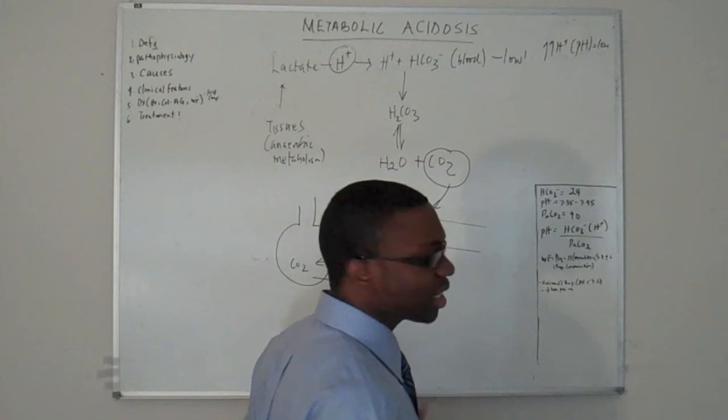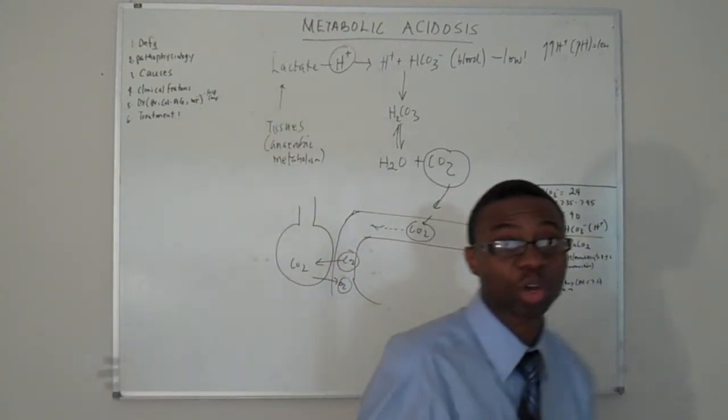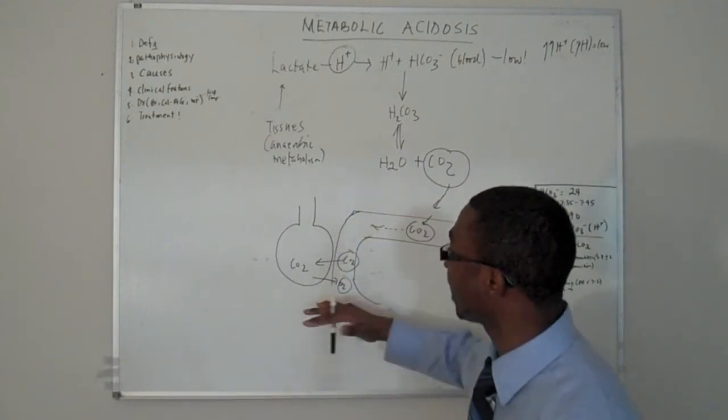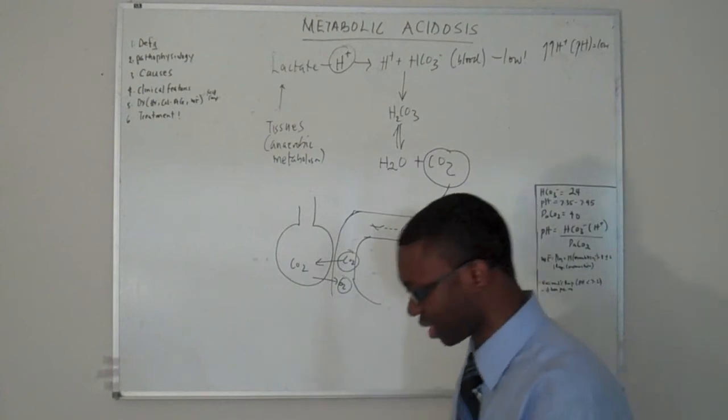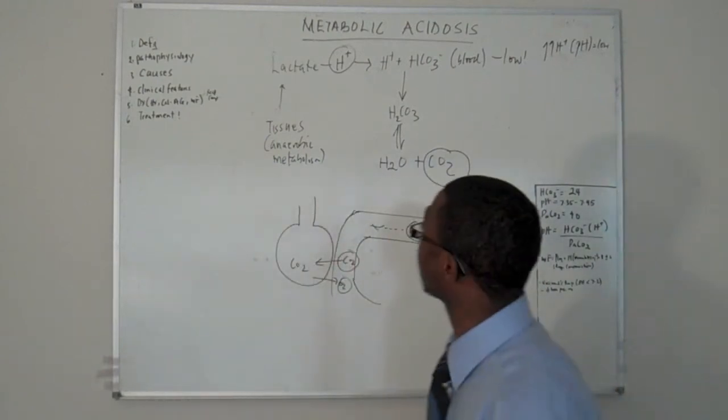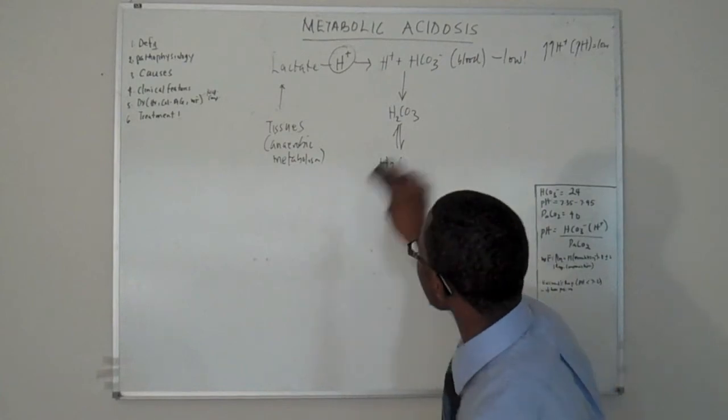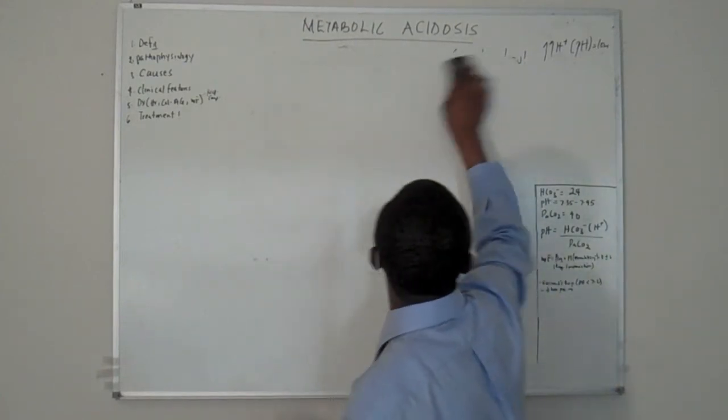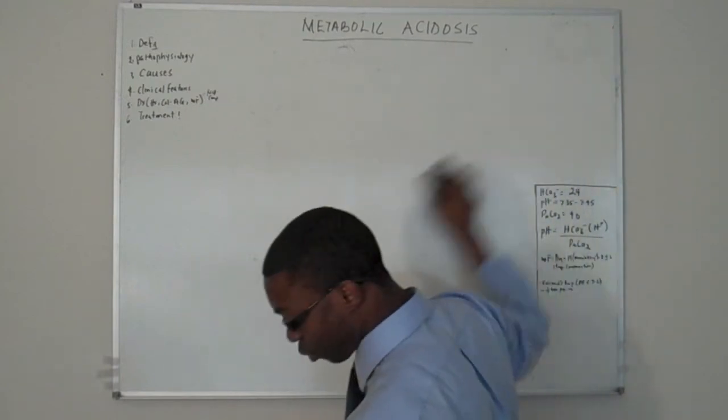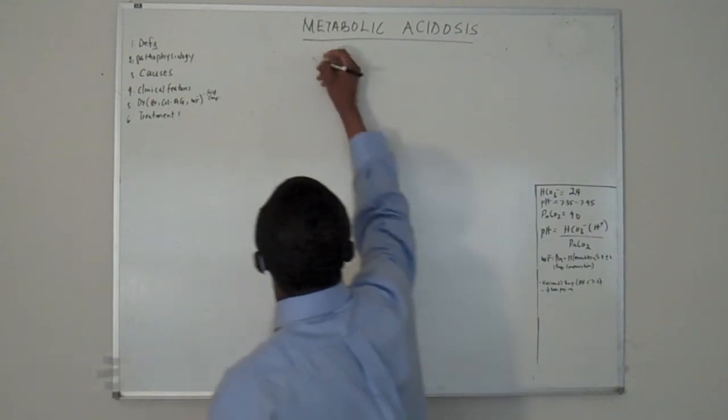But we're going to talk about what actually causes decreased tissue perfusion that we talked about in the beginning. From here on, we're going to move on to what actually causes this. Because if you don't know what causes this, there's no point. You might just know the pathophysiology. But if you don't understand what is causing it, we might as well just be wasting our time. So let's move on to causes of metabolic acidosis.